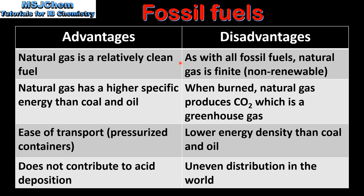Next the disadvantages. As with all fossil fuels, natural gas is finite. When burned, natural gas produces carbon dioxide which is a greenhouse gas. It has a lower energy density than coal and oil, and it has an uneven distribution in the world.